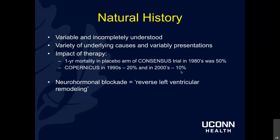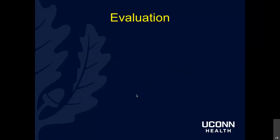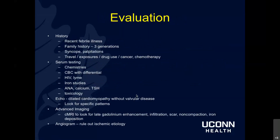The mainstay of therapy is neurohormonal blockade, which I discussed in further detail in a prior talk. What we try to achieve with neurohormonal blockade is reversed left ventricular remodeling - essentially counteracting the chamber dilation happening in an effort to decrease wall stress.